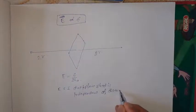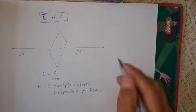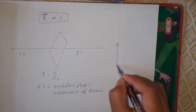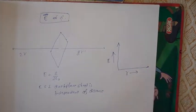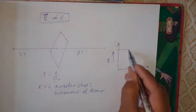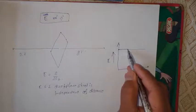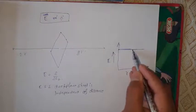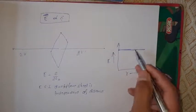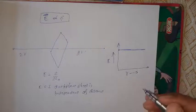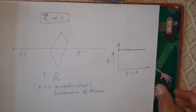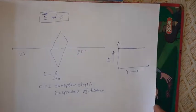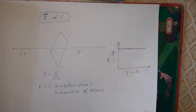The electric field does not depend on distance from the sheet. If we show the variation of electric field with distance, it remains constant — shown as a parallel horizontal line on a graph. So, this is the conclusion: electric field intensity due to a uniformly charged infinite plane sheet is E = Sigma / (2·epsilon-naught), and it is uniform and independent of distance.